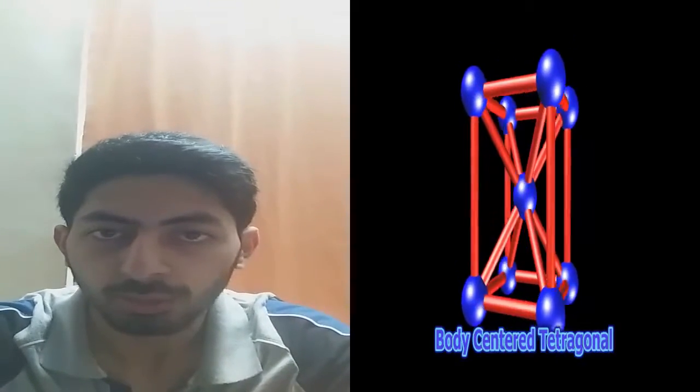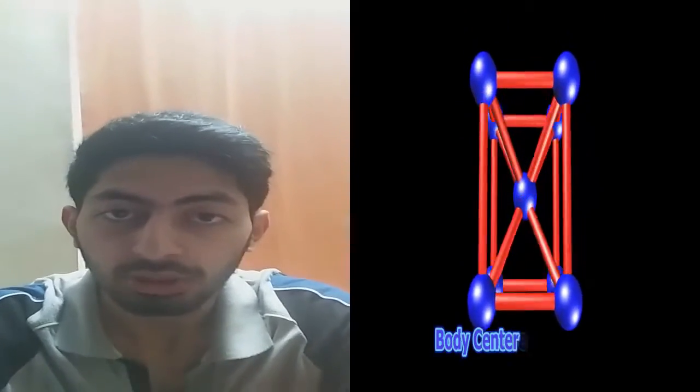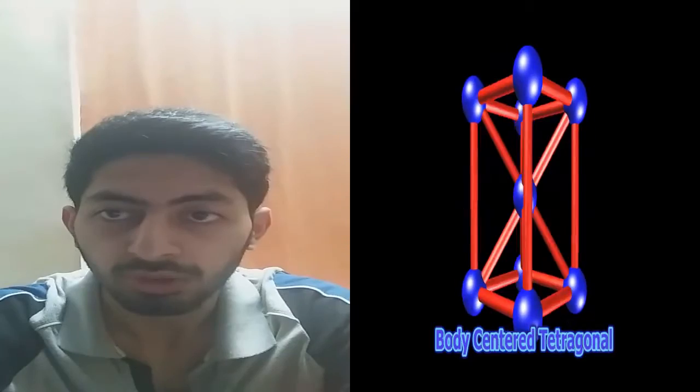Hi again. I am Hamza and now this time I am going to be talking about body centered tetragonal arrangement. In this arrangement, there are eight atoms on the edges and there is one atom in the center. In this, the angles are all 90 and the sides A, B and C are related as A equals B but not equal to C. An example of this crystal structure is martensite which is a form of steel. Thanks.